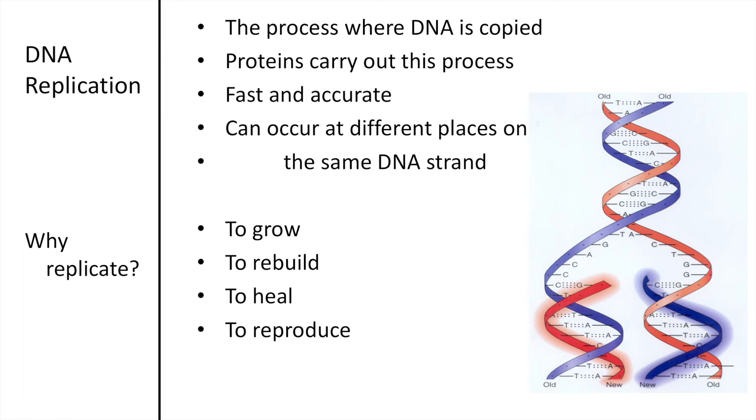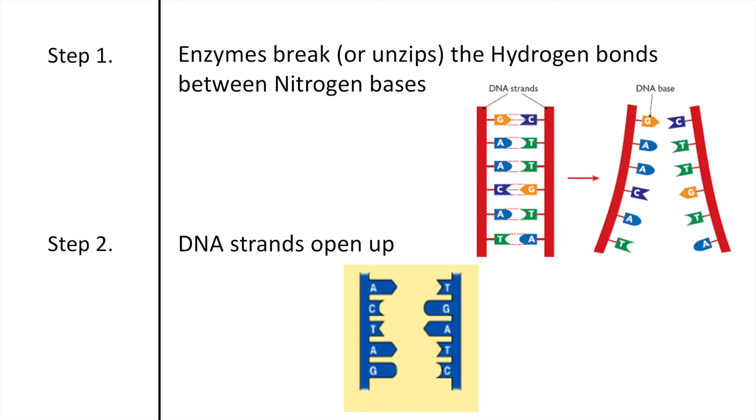Let's talk about the steps. The first step is that enzymes break or unzip the hydrogen bonds that are in the original DNA. And so the hydrogen bonds, remember, are between the nitrogen bases. So if we look here, here we have an original DNA strand, and then there will be an enzyme that comes in and separates the nitrogen-containing bases apart from each other. And this brings us to step two, which then we have the DNA strands opening up.